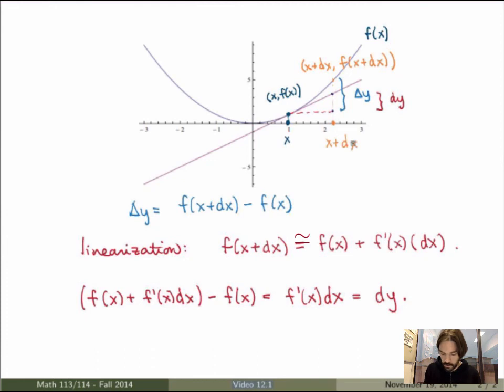So if you replace the function by its linearization and calculate the difference between the values of the linearization, you end up with a differential. Now of course you see that if you take dx very very small, then both will become very close, so the differential will become the same. So in other words the linearization becomes a better and better approximation of the function.